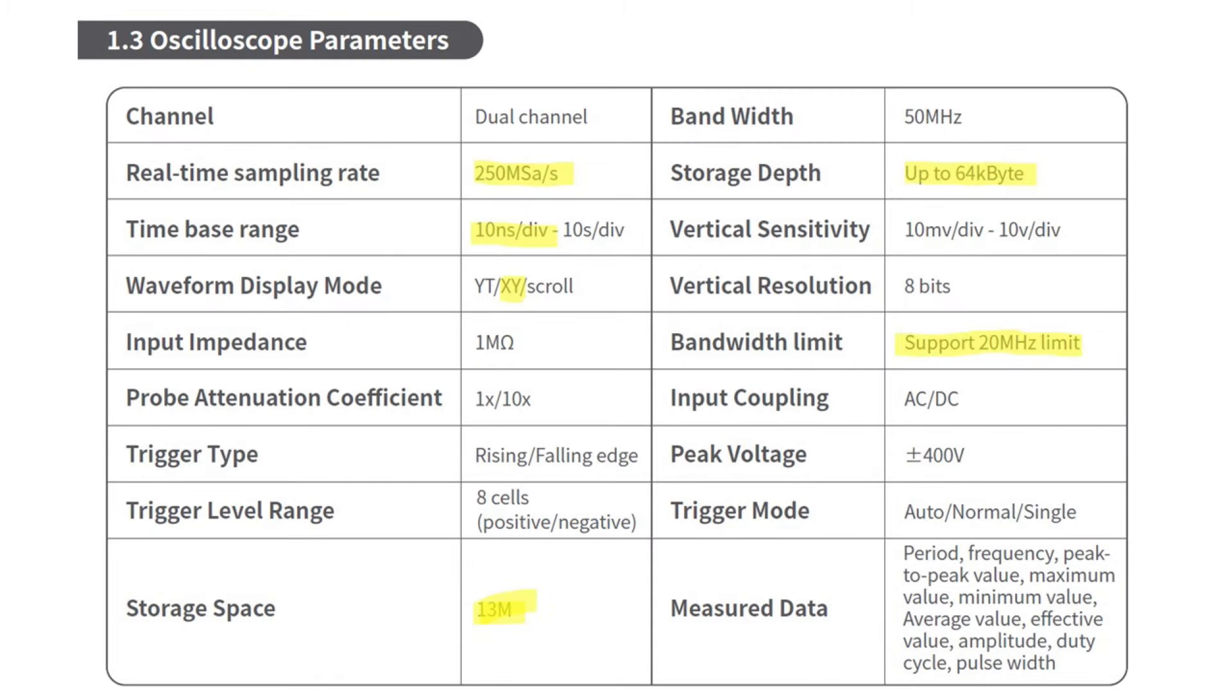For oscilloscope specs, it says it's got a real-time sampling rate of 250 mega samples per second, time base down to 10 nanoseconds, and it's got XY mode - at last! The 2C23T didn't have that. Storage space of 13 megawatts, storage depth up to 64 kilobytes. It's got improved vertical sensitivity over the 2C23T - that was 20 millivolts which was a show-stopper. This is at least 10 millivolts, that's an improvement.